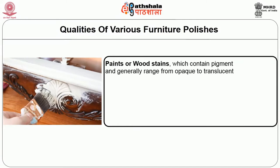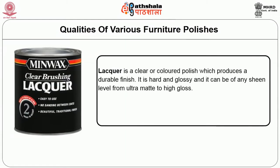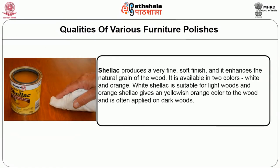Lacquer finish is a clear or colored finish which produces durability in the surface. It is hard and glossy and can be of any sheen level. Another important furniture polish is shellac, which produces a very fine soft finish and enhances the natural grain of the wood. Shellac is available in two colors — white and orange. White shellac is suitable for lighter woods, and orange shellac gives a yellowish-orange color and is often applied on dark woods.